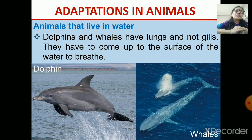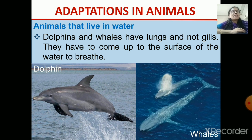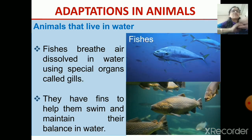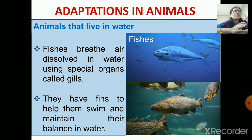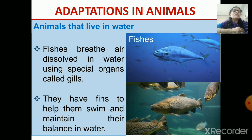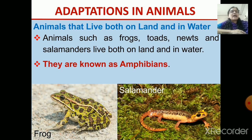Dolphins and whales do not have gills — they have lungs. So they have to come up to the surface of the water to breathe oxygen from the atmosphere. Fish breathe air dissolved in the water by gills. They also have fins so that they can swim and keep their balance in the water. These are examples of aquatic animals.